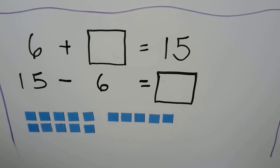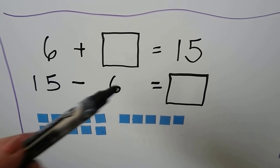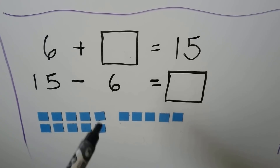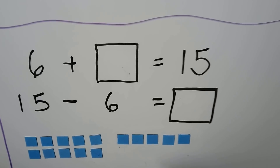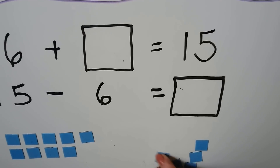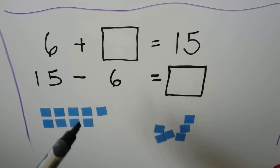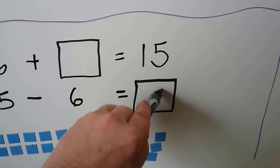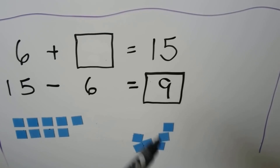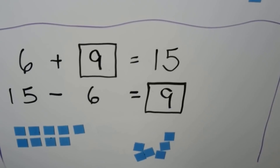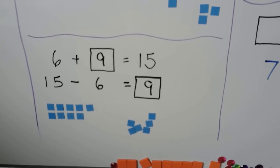Here we have 6 plus an unknown number is equal to 15. We can solve this using the related fact: 15 minus 6 equals the unknown number. We have 15 counters. If we take six away — this 5 and one more — we have 1, 2, 3, 4, 5, 6, 7, 8, 9 left. So 15 minus 6 equals 9, meaning 6 plus 9 equals 15. Our unknown number is 9. These are related facts using the same three numbers — 6, 9, and 15 — in a different order.